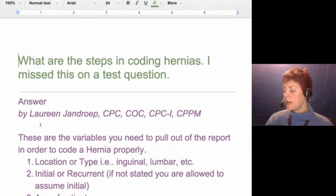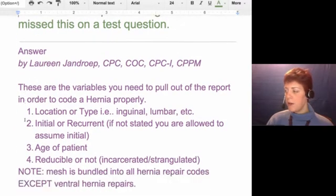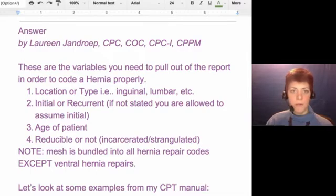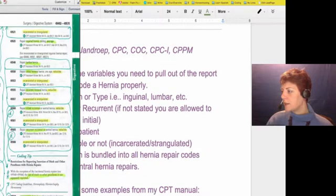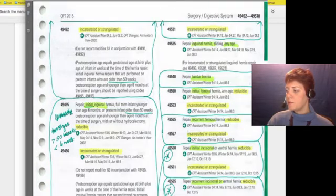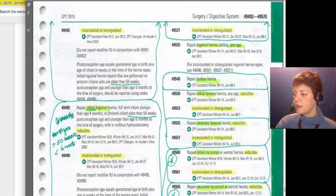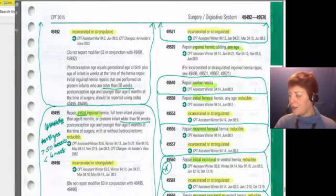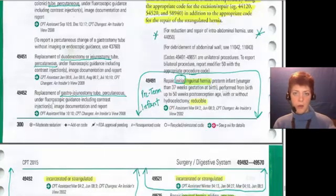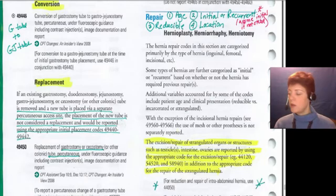I pulled out my CPT manual and I use a method called bubbling and highlighting. This is my CPT manual — it was the star of the show at my Blitz broadcast in December. It looks a little messy, but the concept is to group like codes together: typically a parent code with the indented codes and any parenthetical notes with it.